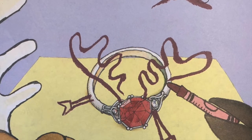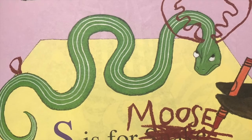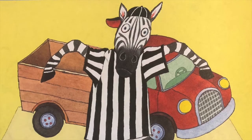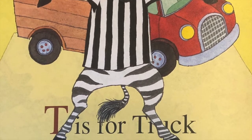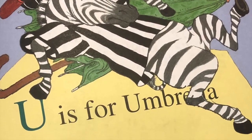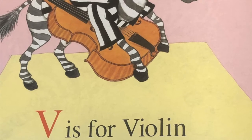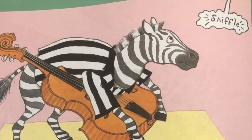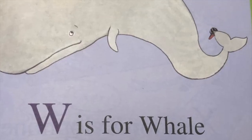R is for moose. S is for moose. Stop it! T is for truck. U is for umbrella. V is for violin.